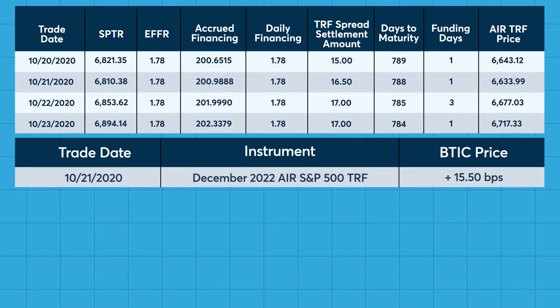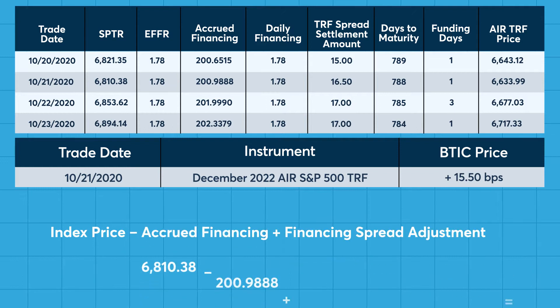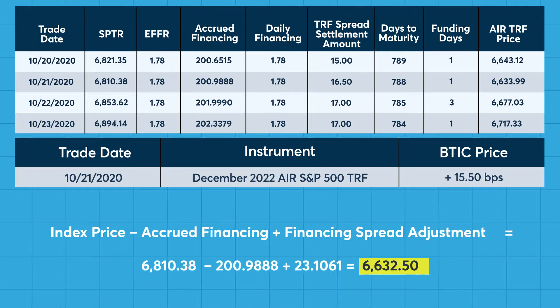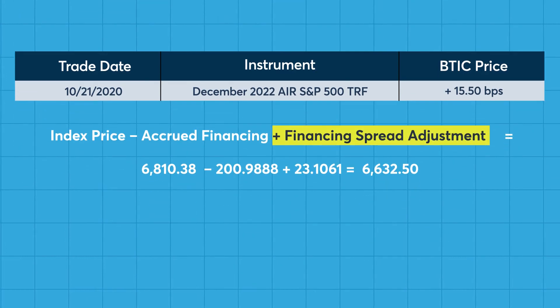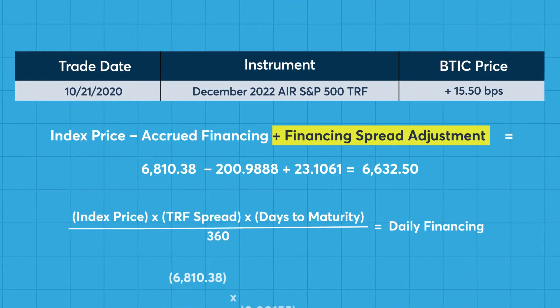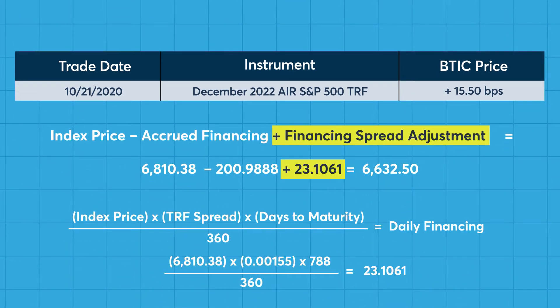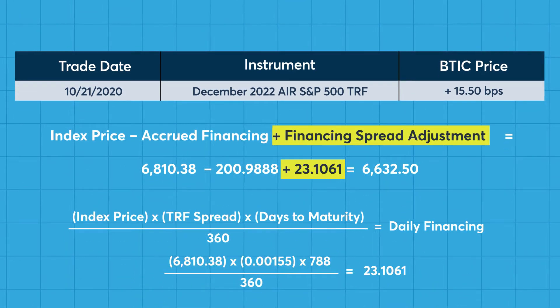This would equate to an AIR TRF price of 6,632.50, whereby the financing spread adjustment was calculated as 23.1061.